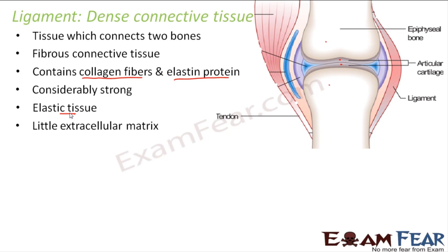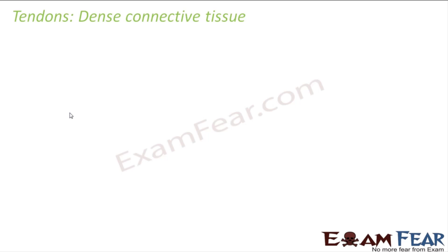Ligament is an elastic tissue. It has elasticity, so it can bear some twisting and curving without breaking because of the elastin protein. It has little extracellular matrix and more fibers — that is why it is called a dense connective tissue. The collagen fibers and elastin protein together give it flexibility and elasticity.